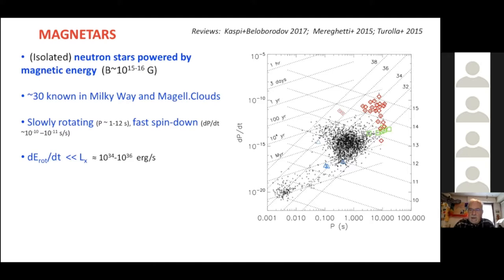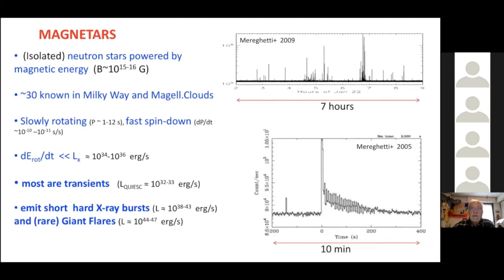What is relevant for us today is that most magnetars are transient objects. This means that they spend most of the time in a quiescent state, but from time to time they start to emit bursts of hard X-rays with a duration of hundreds of milliseconds typically. And these bursts can be emitted either in a sporadic way or in groups of many hundreds of bursts within a small time period.